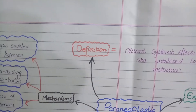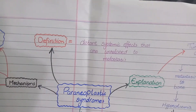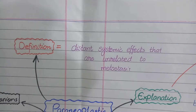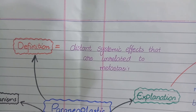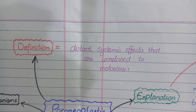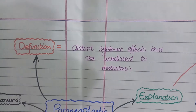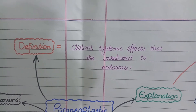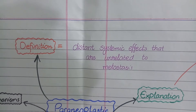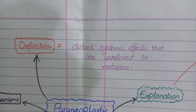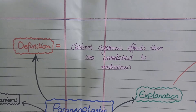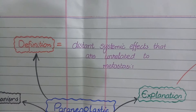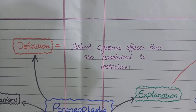Let's move towards the definition. Paraneoplastic syndromes are defined as the distant systemic effects of a tumor that are unrelated to metastasis. If you closely look at this definition, it is composed of two parts. Firstly, paraneoplastic syndromes are distant systemic effects of a tumor. Secondly, they are unrelated to metastasis.